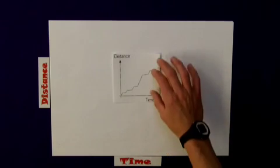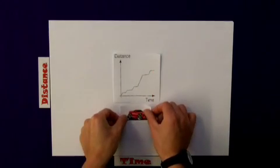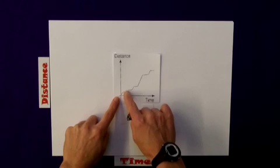This one, whilst it looks a bit messy, is actually quite simple. It's the car in the traffic jam with stop-start motion.